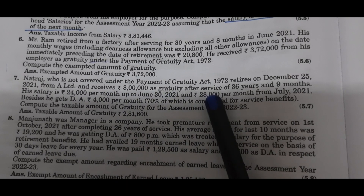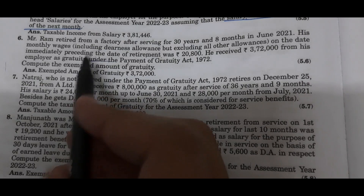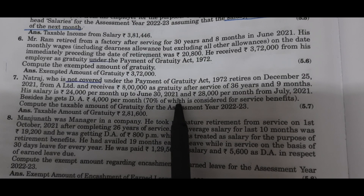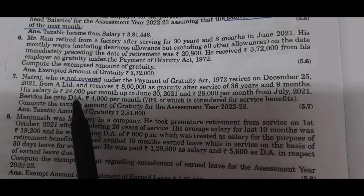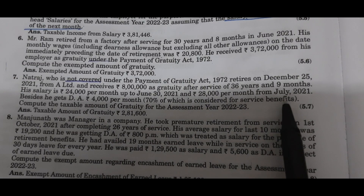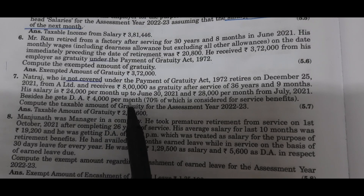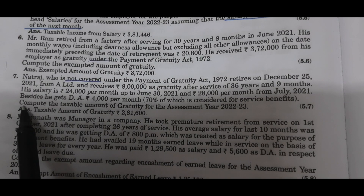Number 7. Natraj, who is not covered under the Payment of Gratuity Act 1972, retires on 25th December 2021 from A Limited and receives ₹8,00,000 as Gratuity after service of 36 years and 9 months. His salary is ₹24,000 per month up to June 30, 2021 and ₹28,000 per month from July 2021. He also gets dearness allowance of ₹4,000 per month, 70% of which is considered for service benefits — so 70% of ₹4,000 DA will be the DA on retirement.